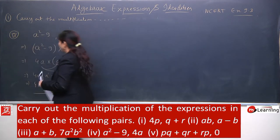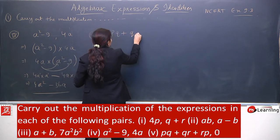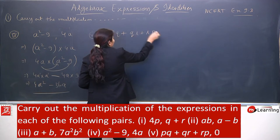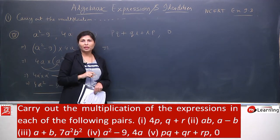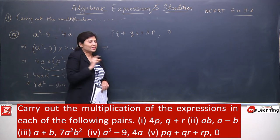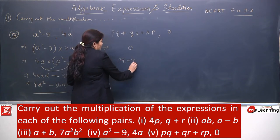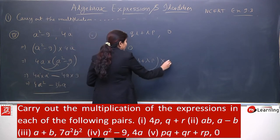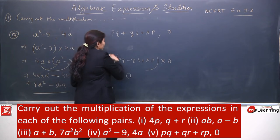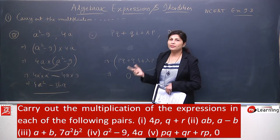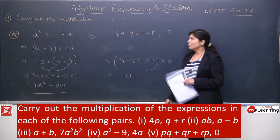Fifth is pq plus qr plus rp and second term is 0. Is there any need to multiply here? What will be the answer if you tell orally? Yes, the answer will be 0. But still we will do one step. pq plus qr plus rp multiply by 0, and then we will write it is 0. Because whenever any number or variable is multiplied by 0, the answer is always 0. So this is a kind of objective question. It was a very small question.